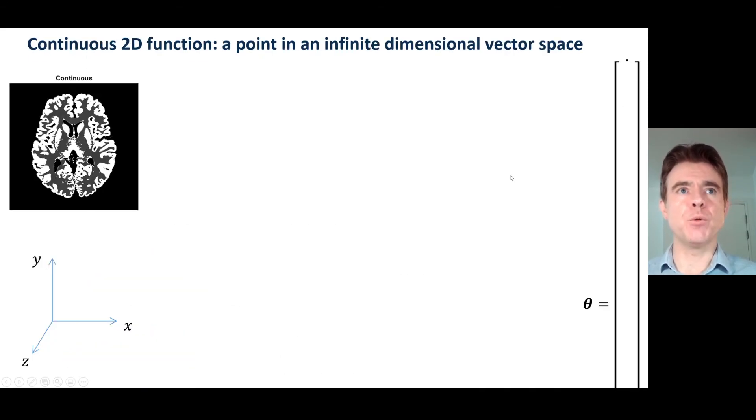I just want to point out that that can be regarded as a point in an infinite dimensional vector space. So how would that work? Well, we'd have to start using the continuous Dirac delta function.